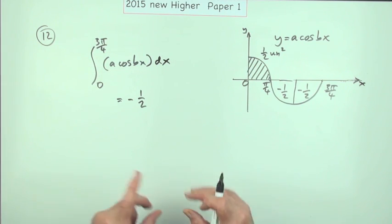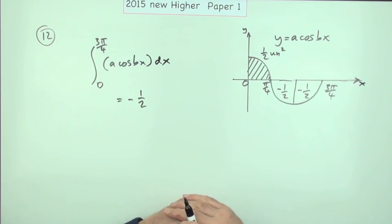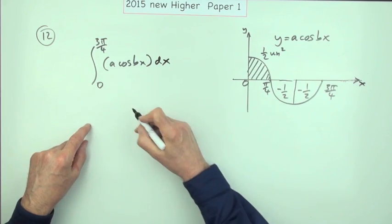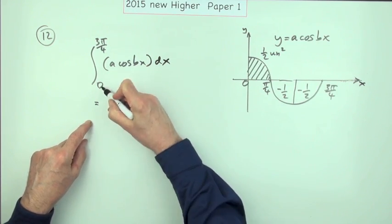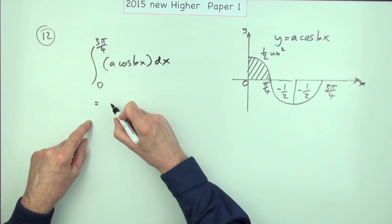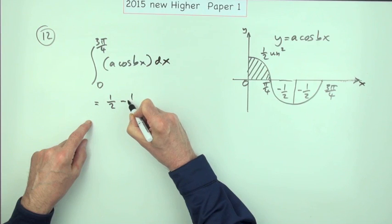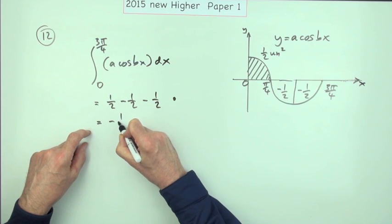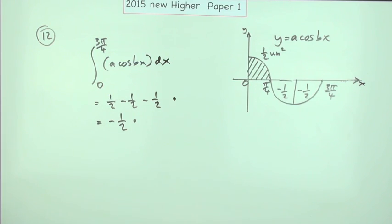Now it's two marks. You could just put this down, I suppose that would do for the working. Maybe the working should have been put down as: this should equal integrating all the way from zero to three pi upon four should equal a half, and then minus a half, and then minus a half. That'd be the first mark, and then minus a half for the second mark.